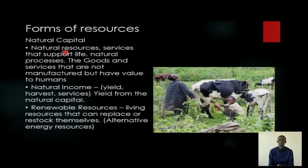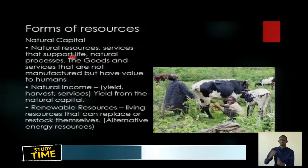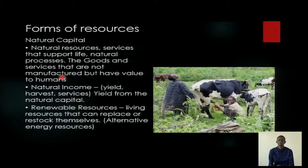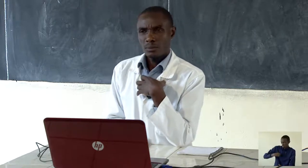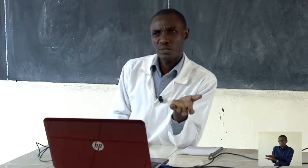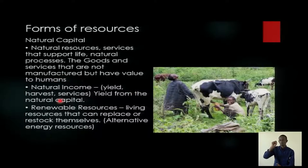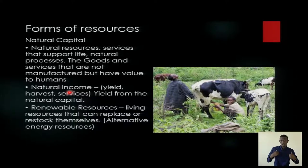When we talk of natural resources — as services, supporting life — we mean the goods and services that are not manufactured but have value to humans. The question is, do we look at it as income? Is it only about banks or factories? Animals provide services too; in some countries they are used as a form of transport — isn't that a service?